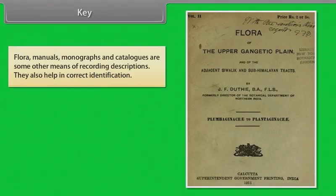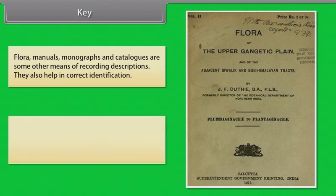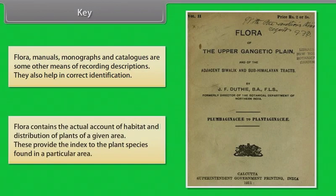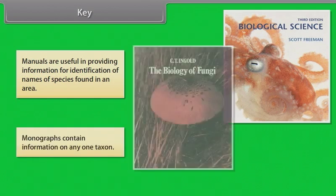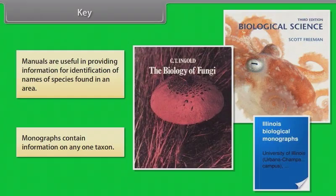Flora, manuals, monographs and catalogues are some other means of recording descriptions and also help in correct identification. Flora contains the actual account of habitat and distribution of plants of a given area and provides an index to the plant species found in a particular area. Manuals are useful in providing information for identification of names of species found in an area. Monographs contain information on any one taxon.